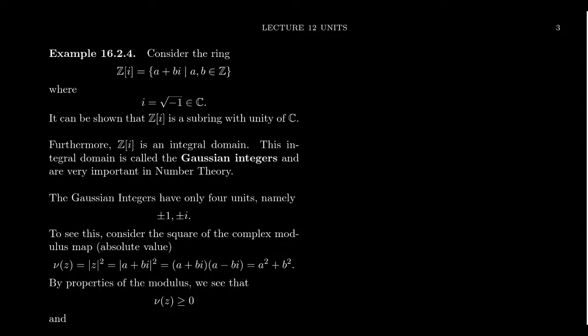It's commonly denoted as Z bracket i, where this i is understood to be a complex unit, that is a square root of negative one. So the ring of Gaussian integers, that's what they're named after Gauss of course.